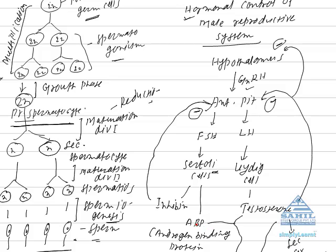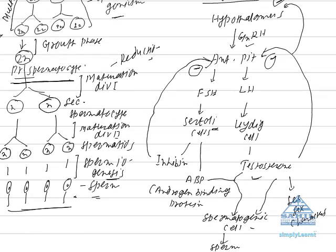Androgen term refers to any male sex hormone, and most important male sex hormone is testosterone. It is called androgen binding protein because it binds to testosterone. Then they together stimulate spermatogenic cells, which is also found in testis, which undergoes spermatogenesis to form sperms.